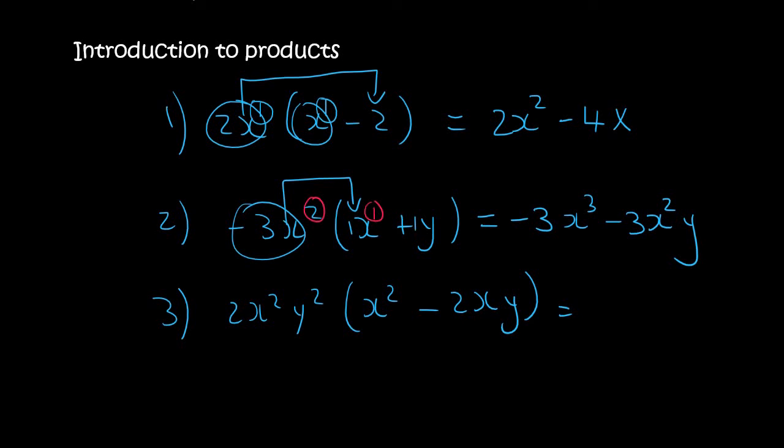Last one. Well, not the last one for this video, but last one for this page. You're going to multiply these two together. So that's just 2. And then you add the exponents. So that's going to be x4. And then there is no other y. So you just say y2.